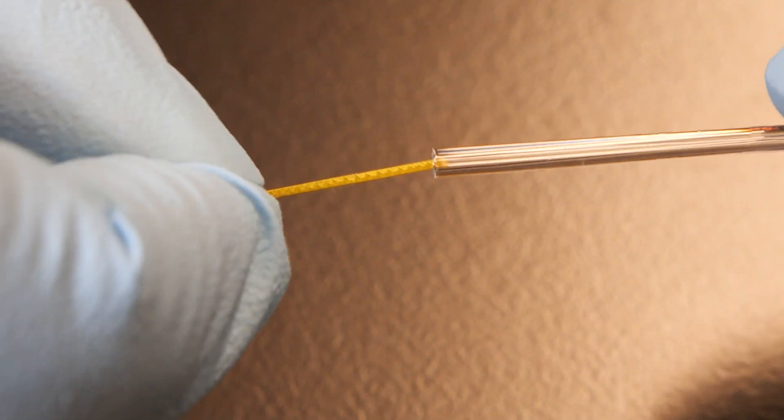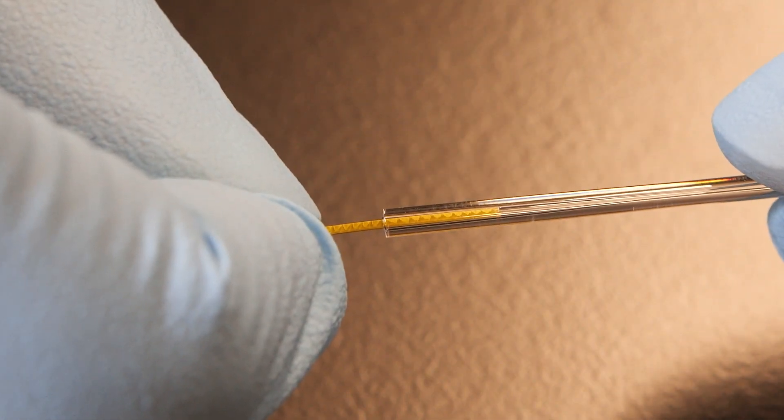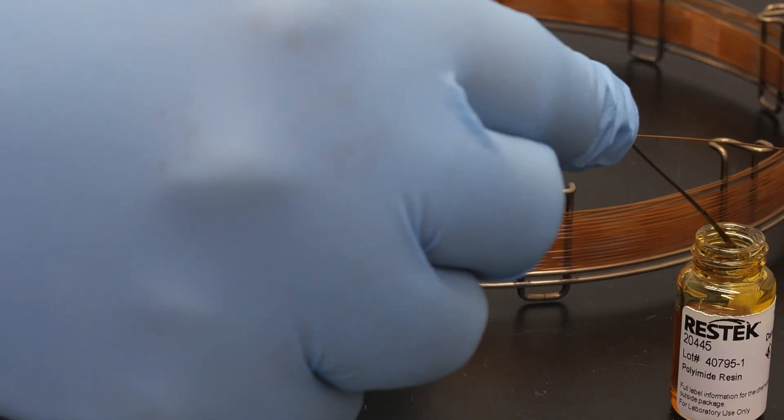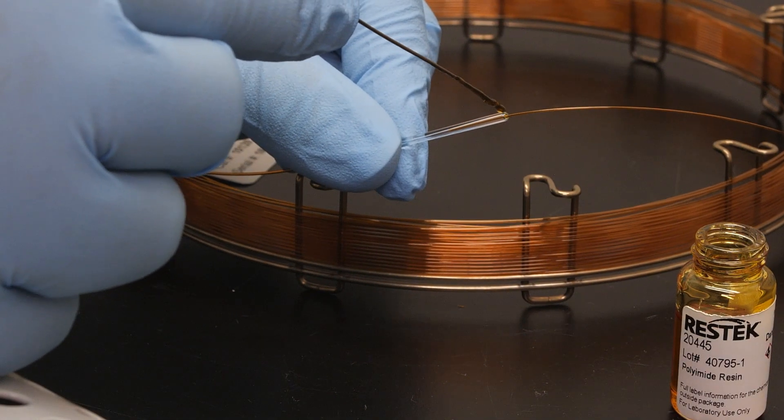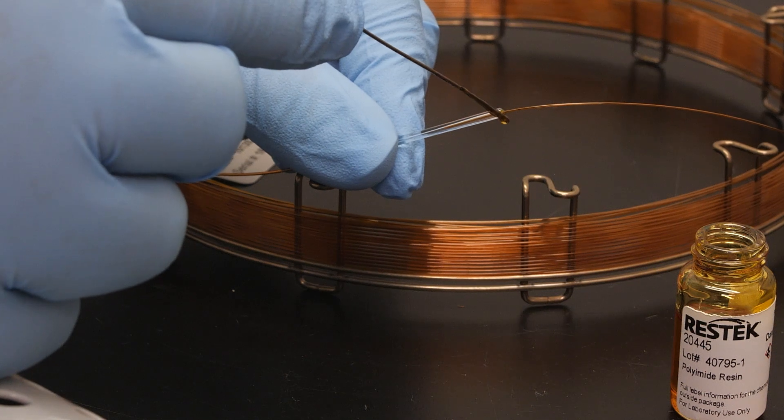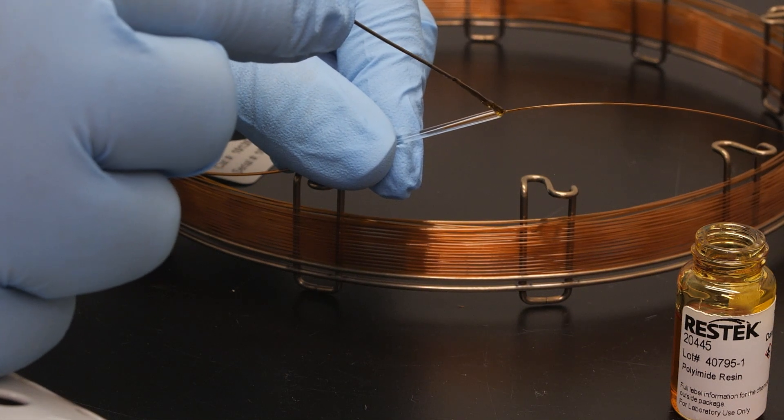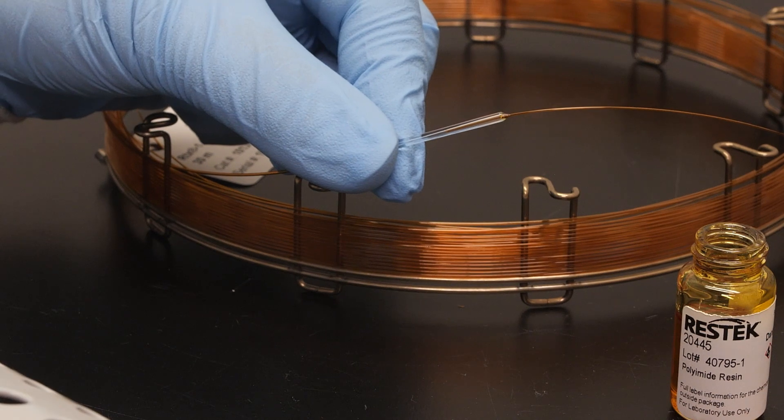Simply repeat the process to insert the other column into the connector. To help ensure a durable connection, you may apply a very small amount of polyimide resin halfway around the column tubing near the opening of the press-tight connector. Allow 30 minutes to air-dry.